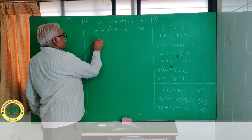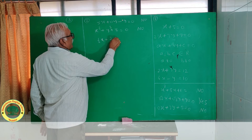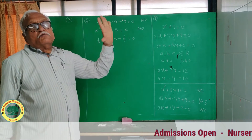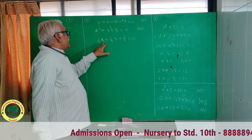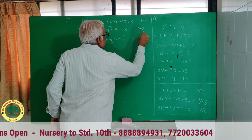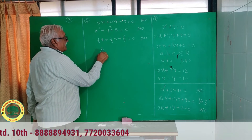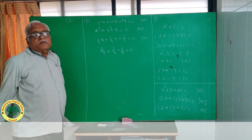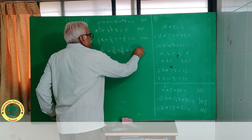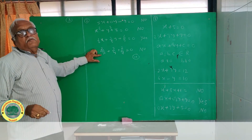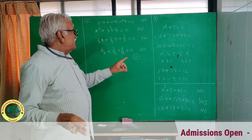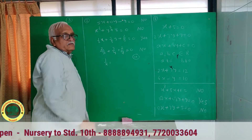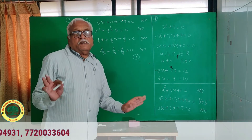Consider 1/2 x plus 3/5 y plus 2/9 equal to 0. It is a linear equation in 2 variables — yes, because variables are 2 and each degree is 1. However, 2/x plus 2/y equal to 0 is not a linear equation because the degree is minus 1. But it can be converted into a linear equation in 2 variables by substituting 1 upon x equal to something.